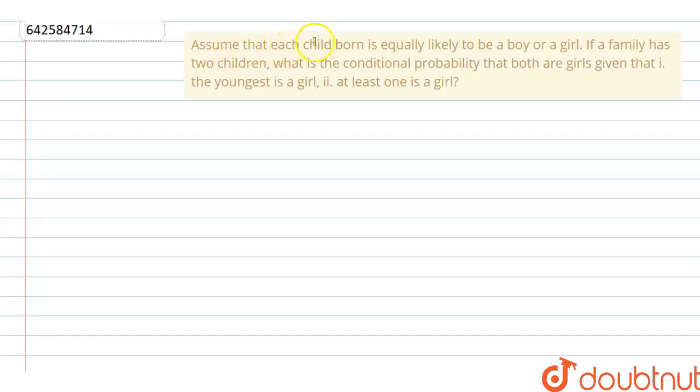Question is: assume that each child born is equally likely to be a boy or a girl. If a family has two children,